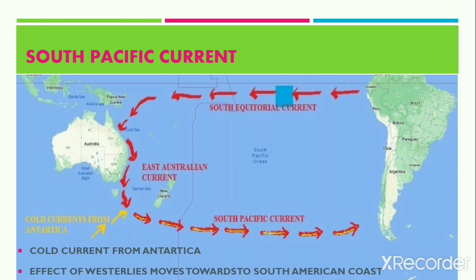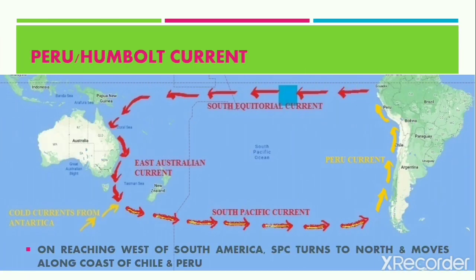After reaching the south of Australia, these two currents together start moving towards the east as a result of the prevailing Westerlies and the Coriolis effect, and they start moving towards the southern tip of the southeast coast of South America. On reaching the west of the South American region, the South Pacific Current turns towards the north and moves along the coast of Chile and Peru. This is termed the Peru Current or the Humboldt Current. These cold currents wash the coast of Peru and Chile and ultimately join back with the South Equatorial Current to complete the gyre system.